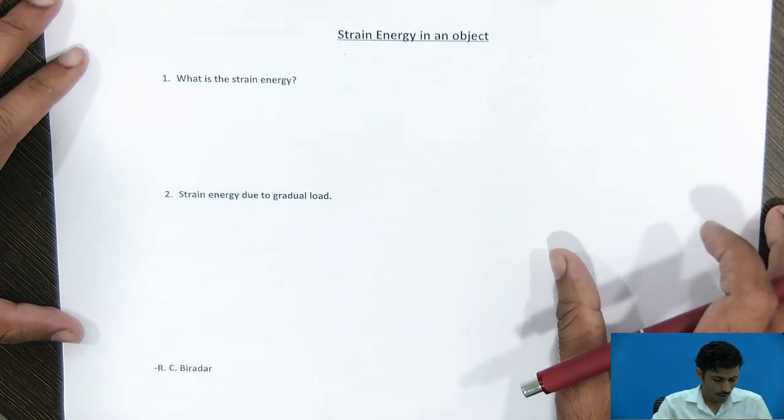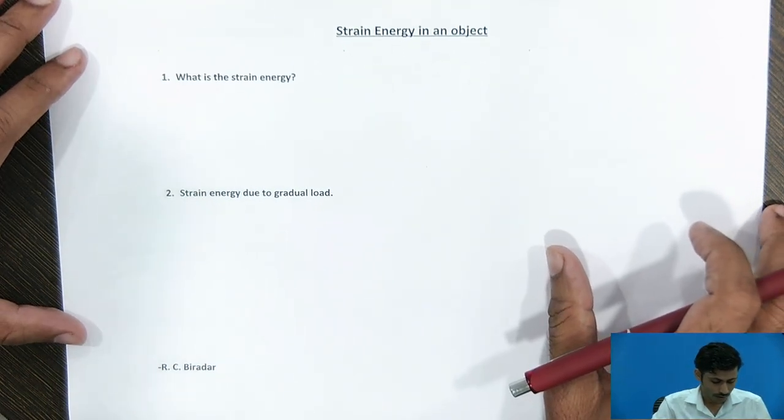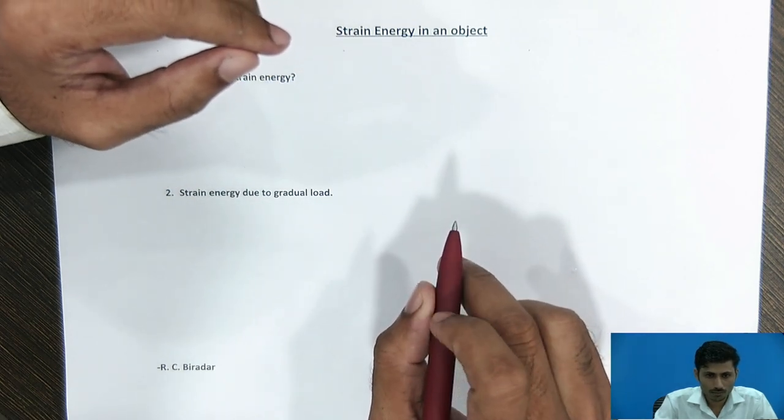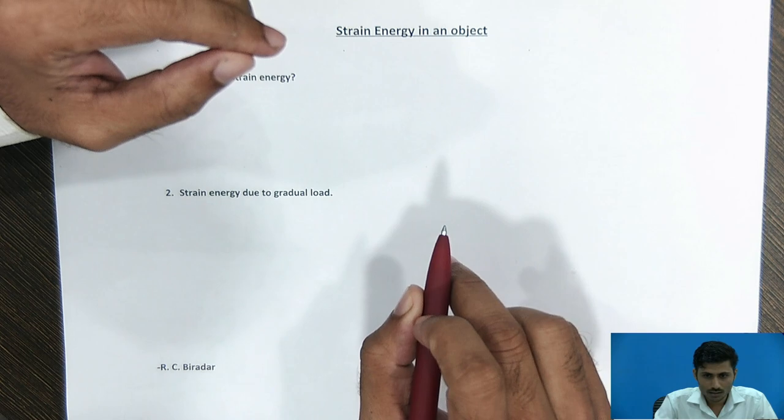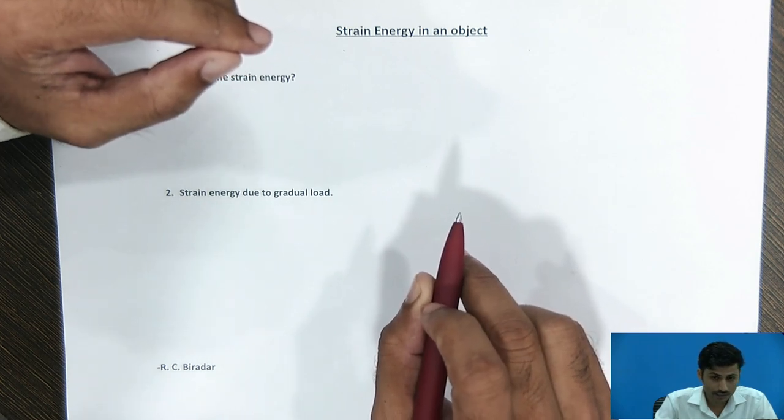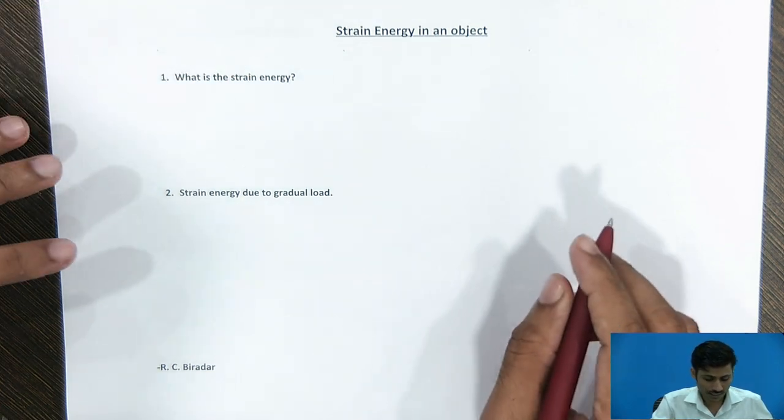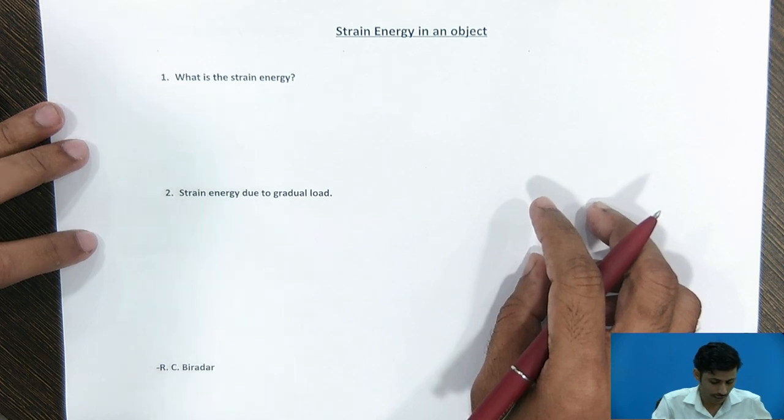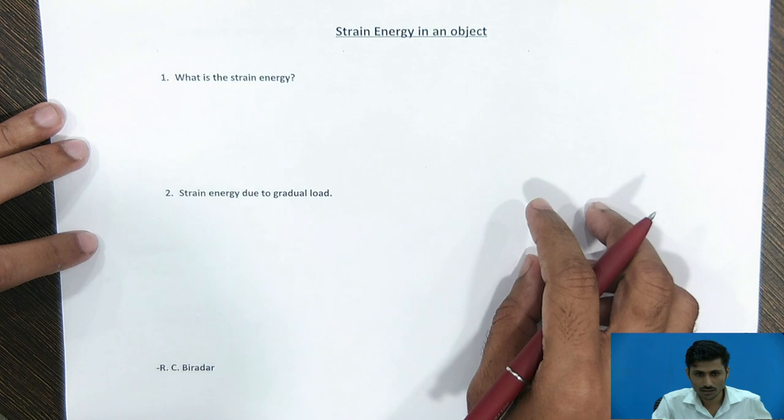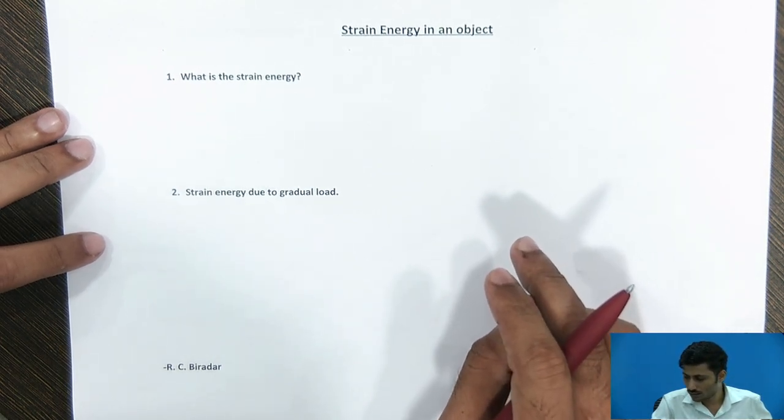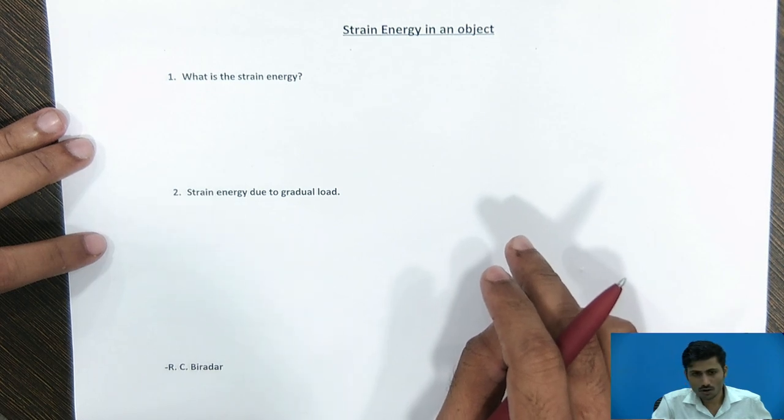Now, what is the strain energy? The strain energy is the energy stored or developed due to the external applied load on a body. Due to this load applied on a body, the molecules or atoms gets distorted from its unstressed state and this will be going to transform into a strain energy. And this is in the form of potential energy. And the strain energy in the form of elastic energy can be recoverable in the form of mechanical work.